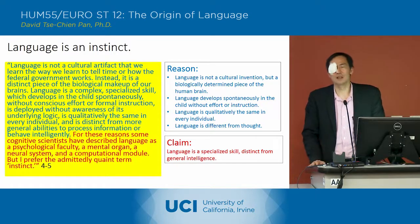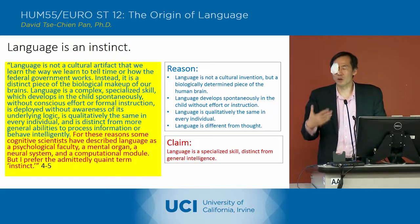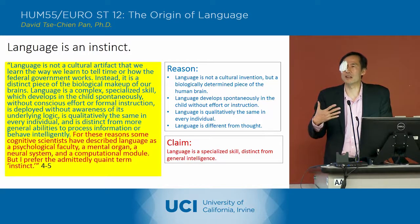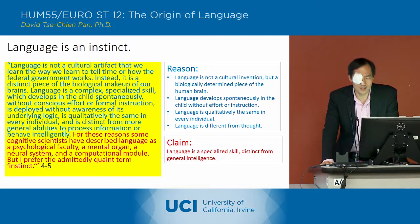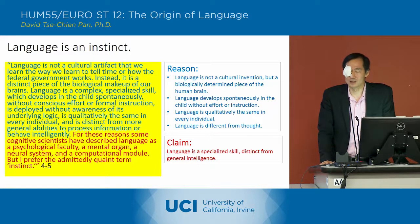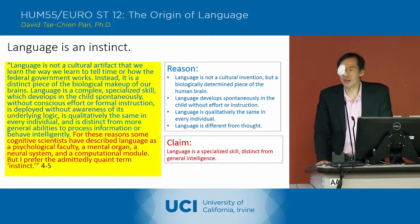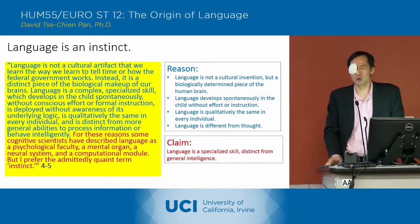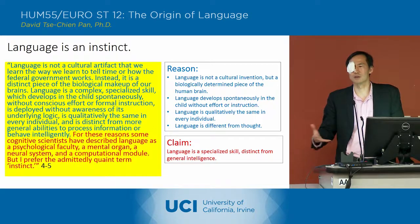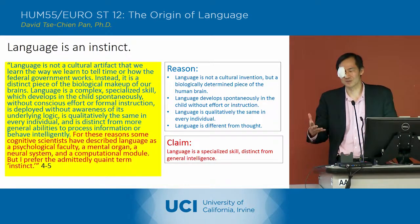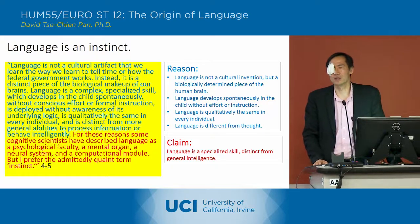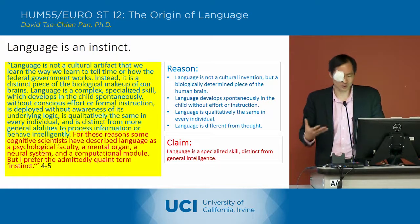An indication of this is the way language develops spontaneously out of the child's brain without special effort or instruction. A lot of the book consists of evidence for this spontaneous development. He also indicates that language is qualitatively the same in every individual — whether English, French, Chinese, or Hungarian — all languages share the same basic underlying structure, and next time we'll be looking through and figuring out what that basic structure is.